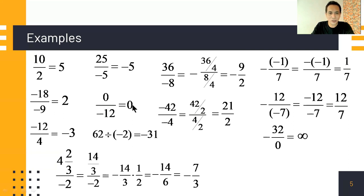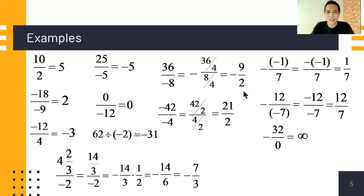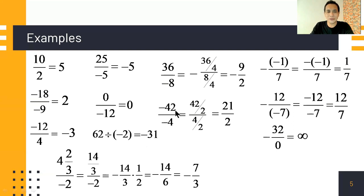Continuing verification: 0 over negative 12 is 0. For 62 divided by negative 2 equals negative 31 — check: negative 31 times negative 2 is positive 62, correct. For 36 over negative 8 equals negative 9 halves — check: negative 9 halves times negative 8 gives 72 divided by 2, which is 36, correct.